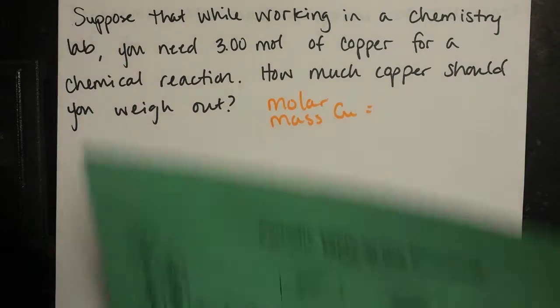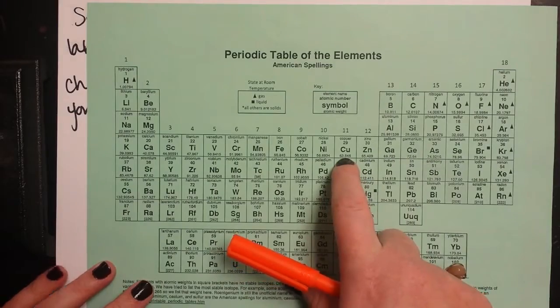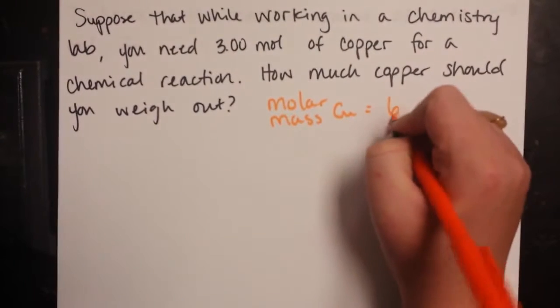So since copper is an element, we can look on the periodic table and get its mass. And so we see that that's about 63.55 grams per mole.